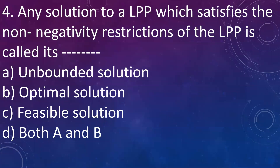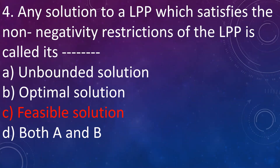Next question: any solution to the LPP, that is linear programming problem, which satisfies the non-negativity restriction of the linear programming problem, is called: A. Unbounded solution, B. Optimal solution, C. Feasible solution, D. Both A and B. Answer is C, feasible solution. When the non-negativity restriction — that is all variables X1, X2, X3 should be greater than or equal to 0 — is satisfied by a certain set of values, then it is called a feasible solution.